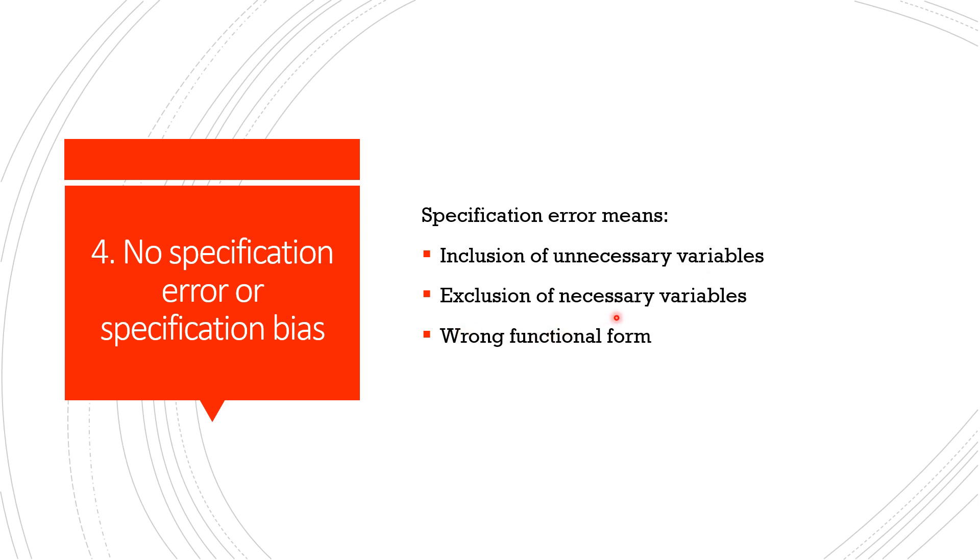Secondly, if again we are constructing a model on consumption expenditure and we are not including a very important variable, that is, the income of a person in the model, do you think that the model will be right or the estimation will be correct? No, there will be some bias in the model. So it is very important to check the variables that we are taking in the model. Thirdly, wrong functional form. If we have written the wrong functional form of our model, then also it leads to the specification error.